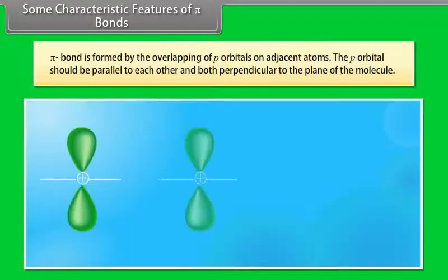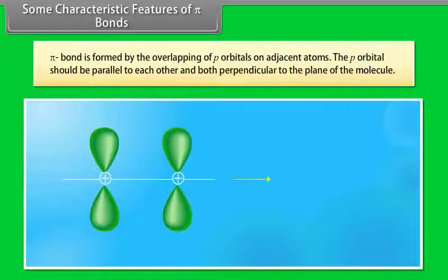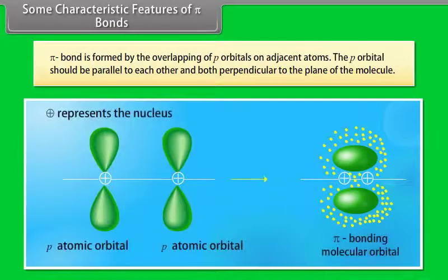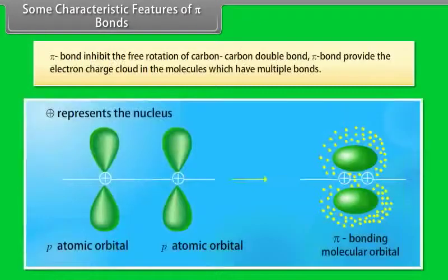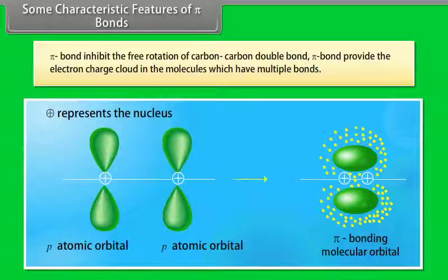Some characteristic features of pi bonds: A pi bond is formed by the overlapping of p-orbitals on adjacent atoms. The p-orbitals should be parallel to each other and both perpendicular to the plane of the molecule. Pi bond inhibits the free rotation of carbon-carbon double bonds. Pi bond provides the electron charge cloud in molecules which have multiple bonds.